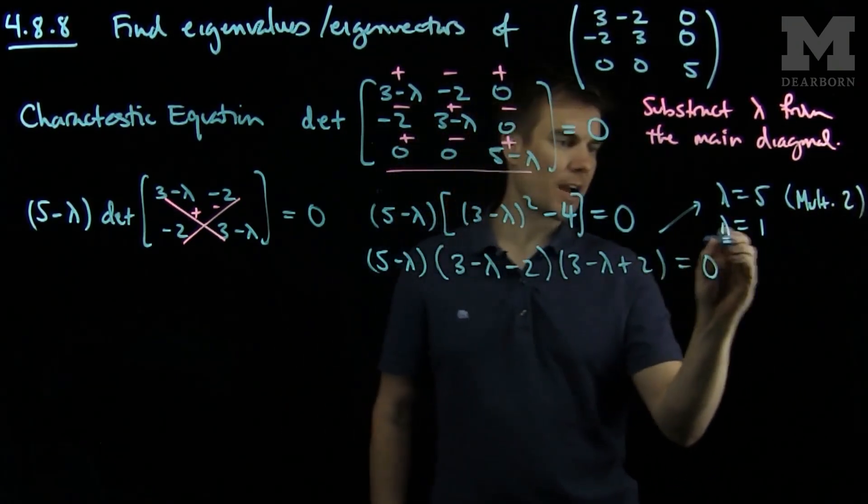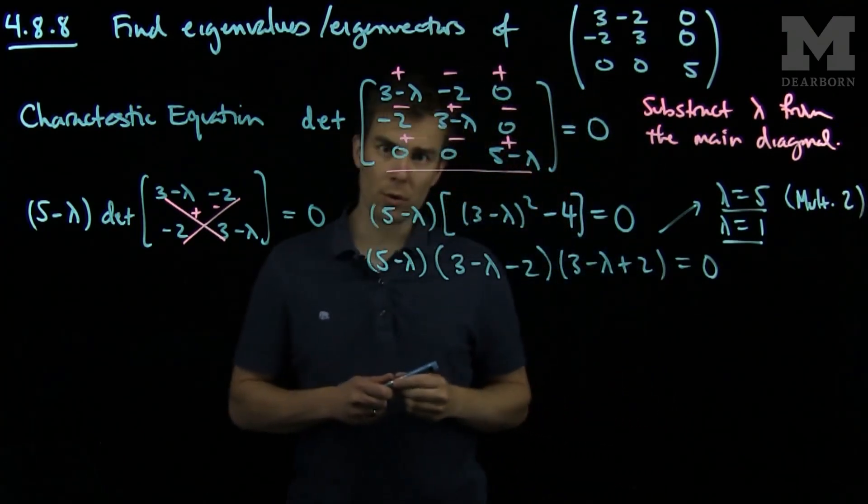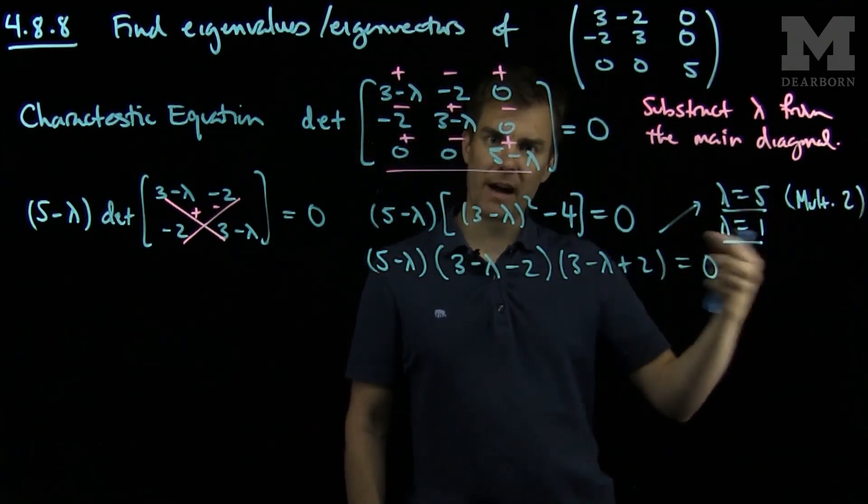So this is a root of multiplicity 2. So I have two eigenvalues: lambda equals 1, and lambda equals 5 with multiplicity 2. That corresponds to a total of 3 eigenvalues, with 5 repeated twice.